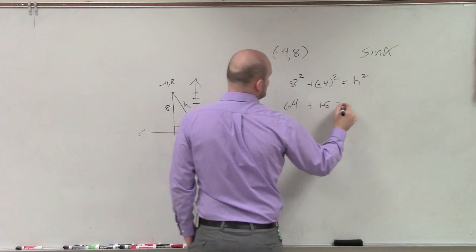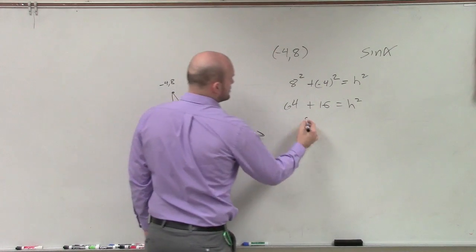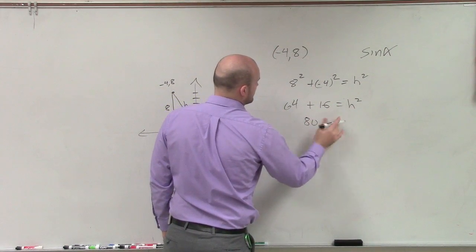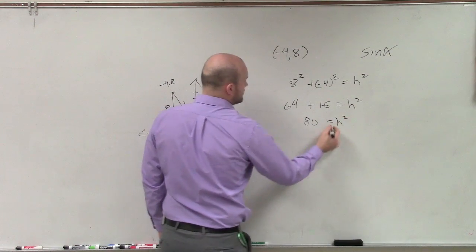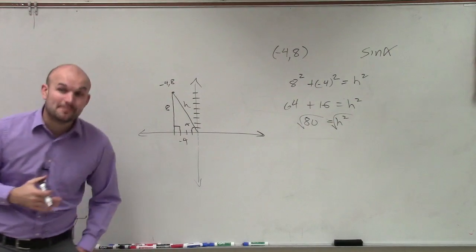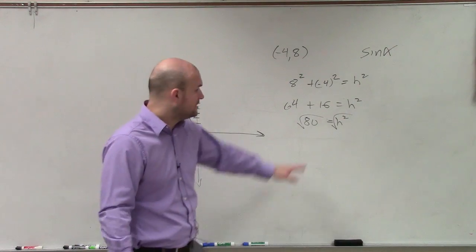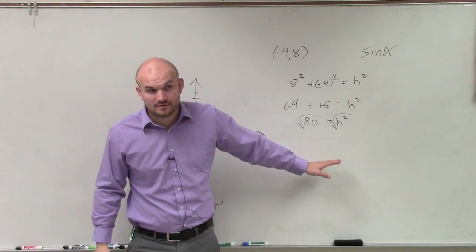64 plus 16 equals h squared. So that becomes 80 equals h squared. Take the square root. Now remember, the hypotenuse is always positive, so we're not going to include the negative part of this.